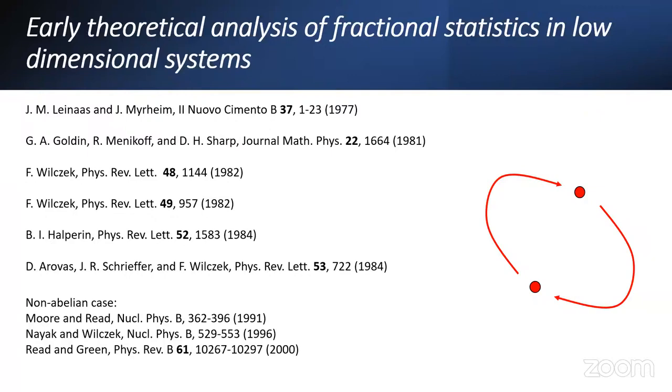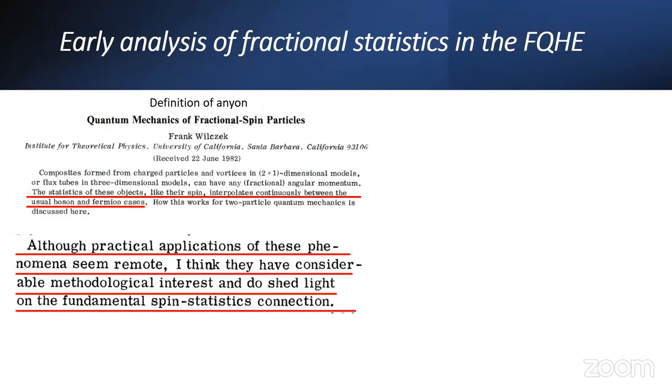Numerous theorists and theoretical works have contributed to our current understanding of fractionalization in reduced dimensional systems. Where it really gets going is with this paper from Frank Wilczek. And this is basically where the anyon is defined. It's a pun, a joke. It can have any statistics, so he called it an anyon.